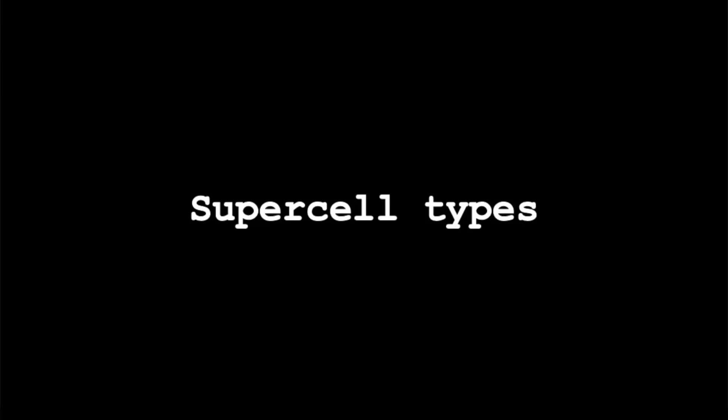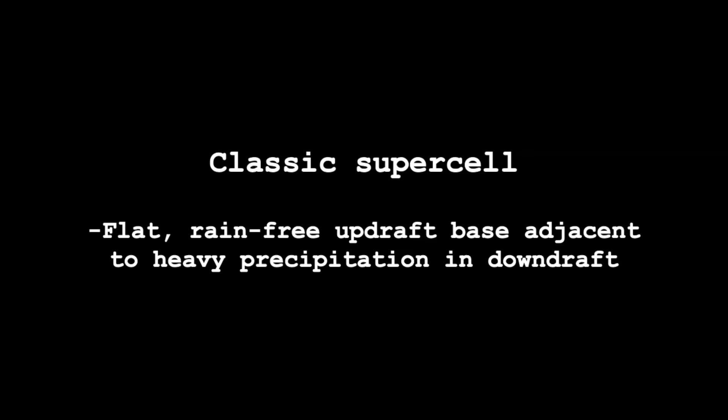Let's first go over the three main types of supercells including their visual and radar characteristics. Starting with the classic supercell. Classic supercells tend to have a flat rain-free updraft base that is displaced from and adjacent to the heavy rain and hail of the downdraft.